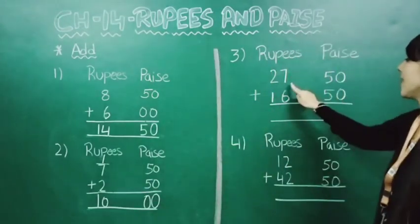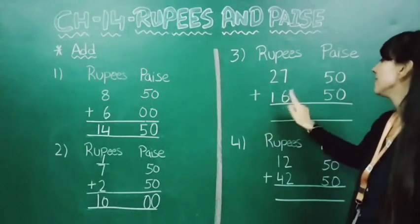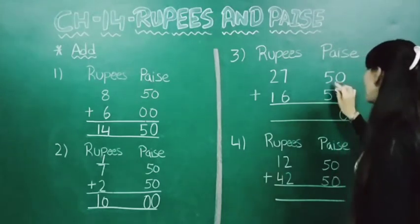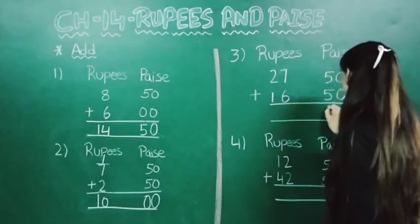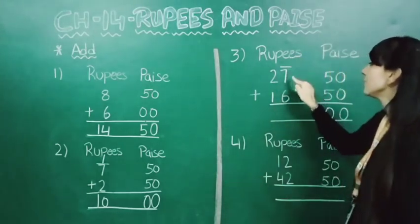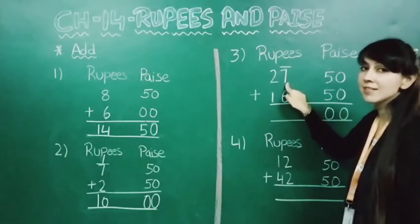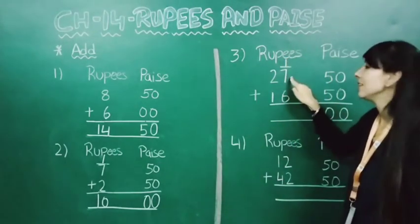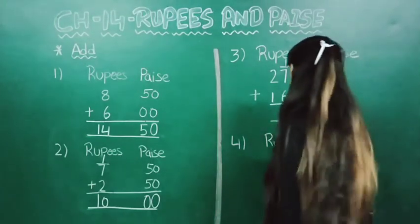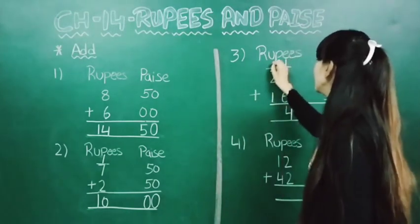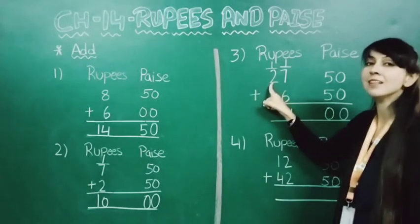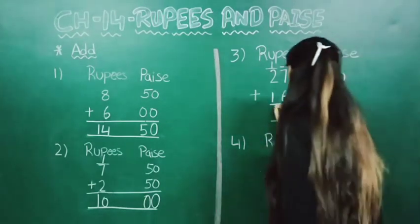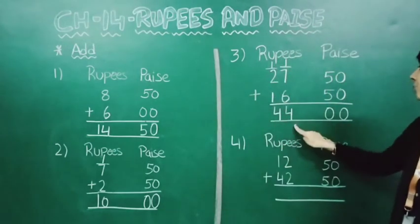Now next one: 27 rupees 50 paise plus 16 rupees 50 paise. Here it will come 0. Now 5 plus 5 is 10, so here we will put 0 and carry 1 in the rupees line — this 7 is in the 1's place. Now 1 plus 7 is 8, and 8 plus 6 is 14, so we write 4 and carry 1 to the 10's place. Now 1 plus 2 is 3, and 3 plus 1 is 4. So the answer is 44 rupees.